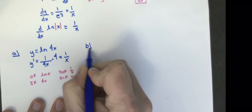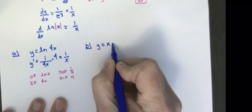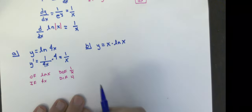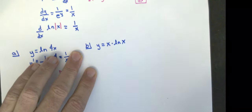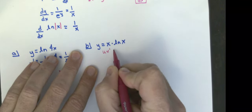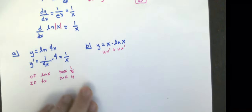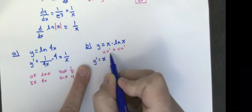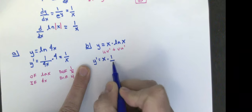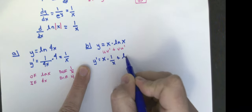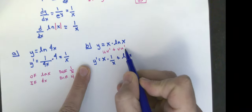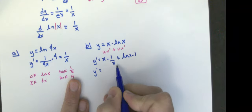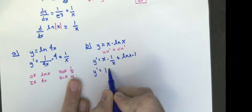The second example: y equals x times the natural log of x. This is a product rule problem. Product rule is u·v′ + v·u′. So y prime equals the first function x times the derivative of the second, which is 1 over x, plus the second function, natural log of x, times the derivative of the first, which is 1. That simplifies — x over x is 1 — so the answer is 1 plus the natural log of x.